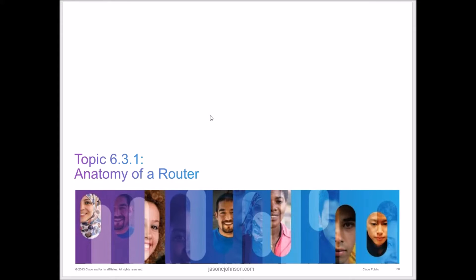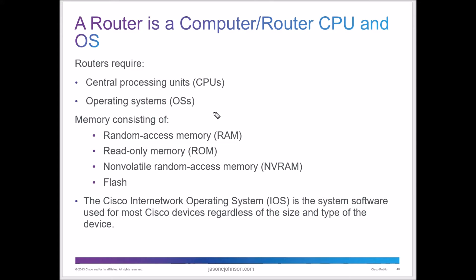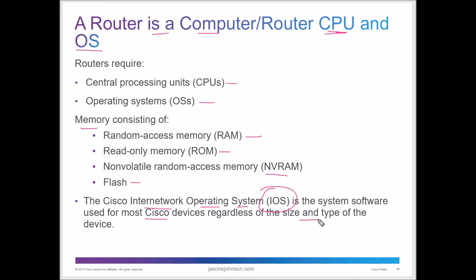Let's take a look at the anatomy of a router. A router is a computer — it has a CPU, a central processing unit, and it has an operating system. It has memory: RAM, random access memory, read-only memory, non-volatile random access memory, and flash memory. All Cisco devices come with the Cisco Internetwork Operating System, called IOS — that's not the same as Apple iOS. Once you become familiar with Cisco IOS, you'll be familiar with it across all platforms.